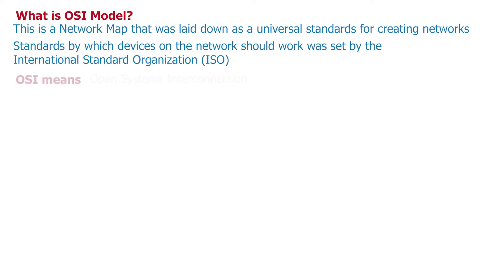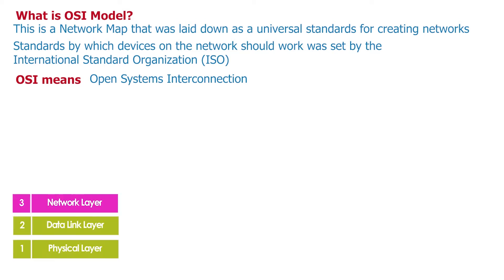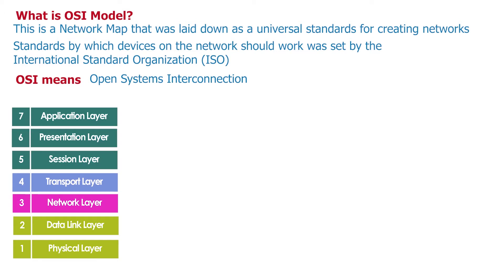OSI means Open Systems Interconnection. This model is further divided into seven layers, and each layer has specific functions it performs within a network. Without this concept there wouldn't have been cordiality between communication devices from different tech companies. This model exists to ensure standards in how communication takes place in networks.